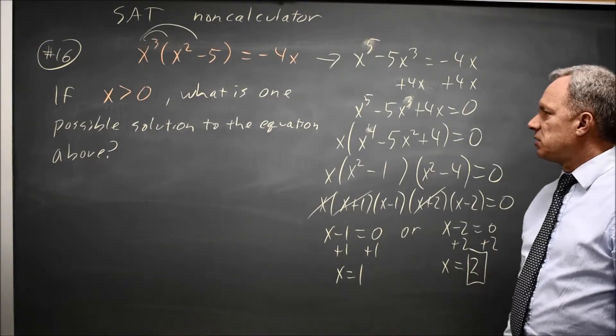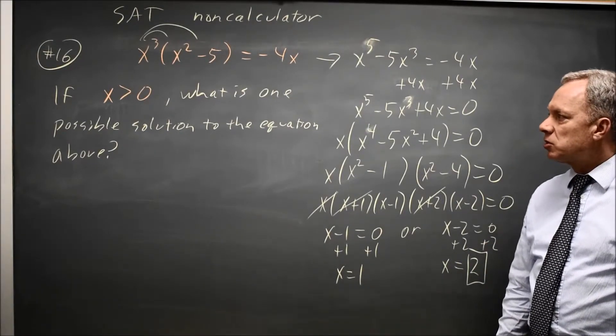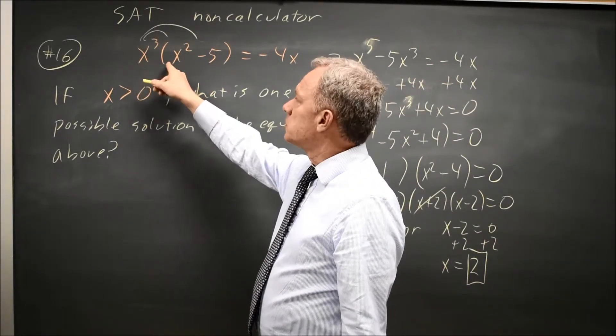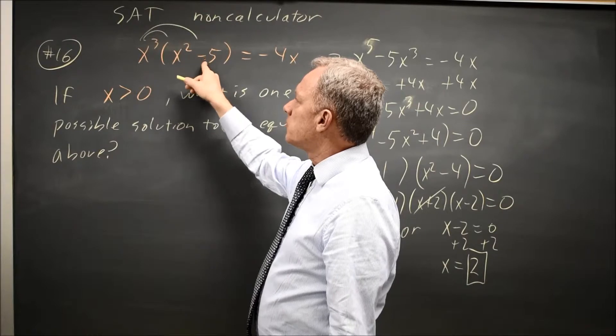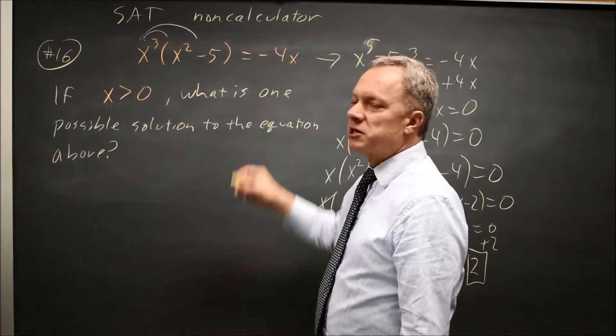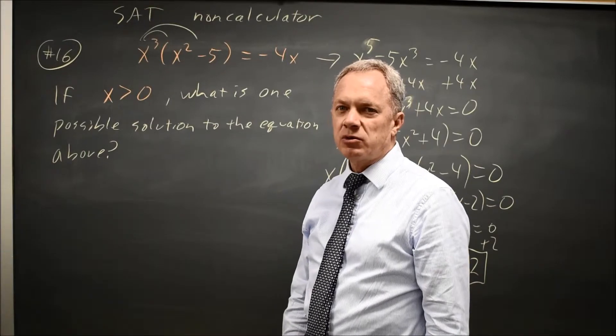I could bubble that in also and either answer works. If I wanted to check, 1 cubed is 1, 1 squared is 1. So 1 minus 5 is negative 4 times 1 is still negative 4. Negative 4 times 1 is also negative 4, so positive 1 worked.